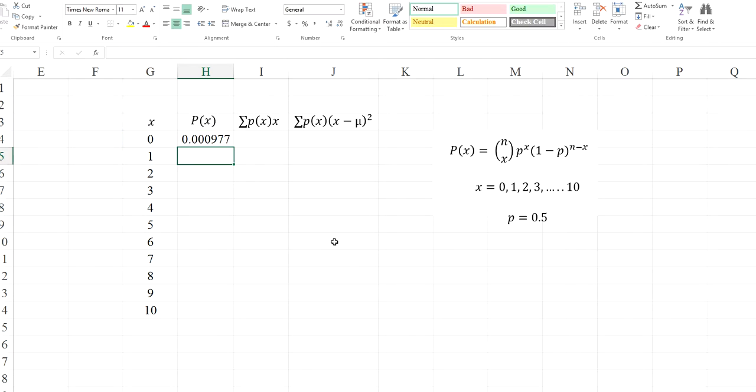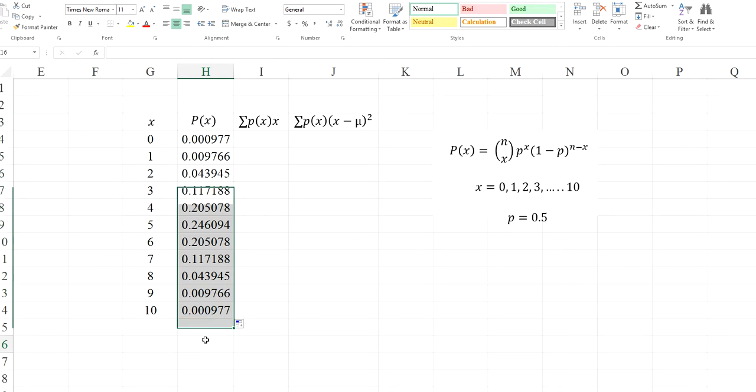So in this case, out of 10 tosses, none of the times head will show up is 0.00977. And I can drag and drop to compute all of those probabilities. Now these are calculated.